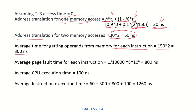If there is a page fault, which occurs 1 in every 10,000 instructions, the page fault service time contributes: (1/10,000) × 8 milliseconds. Multiplying by 10⁶ to convert to nanoseconds, this comes out to 800 nanoseconds.